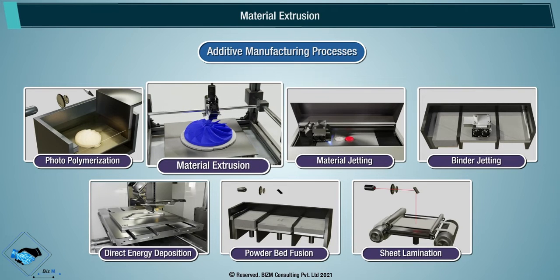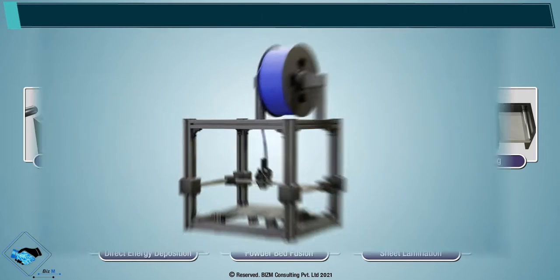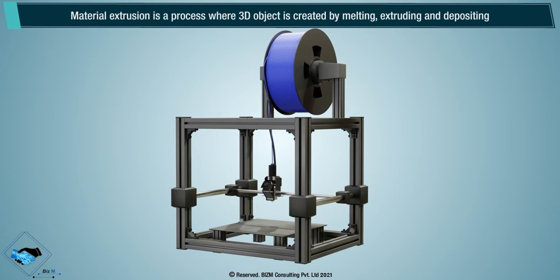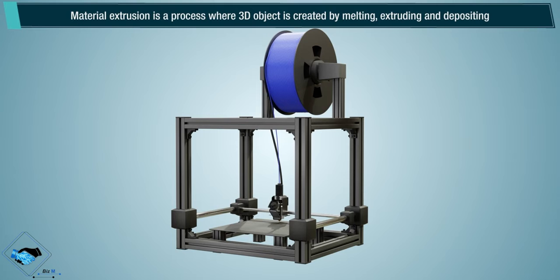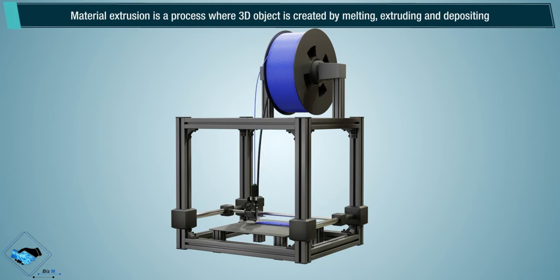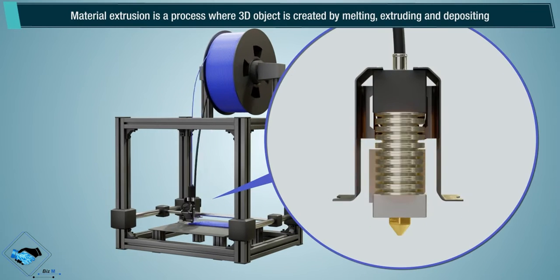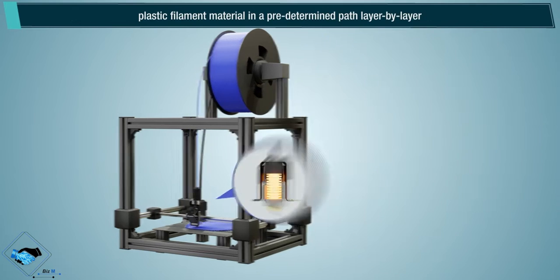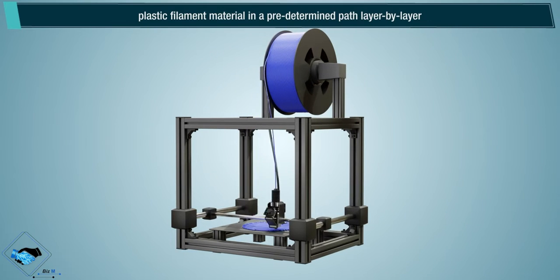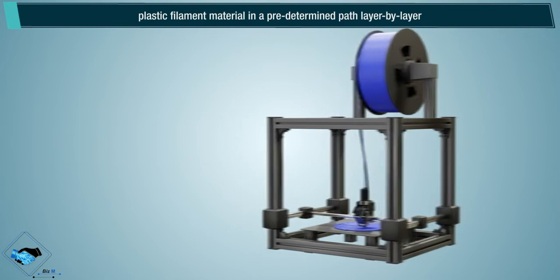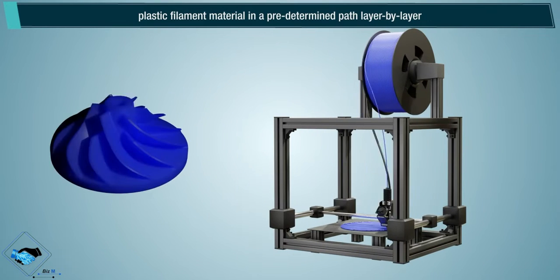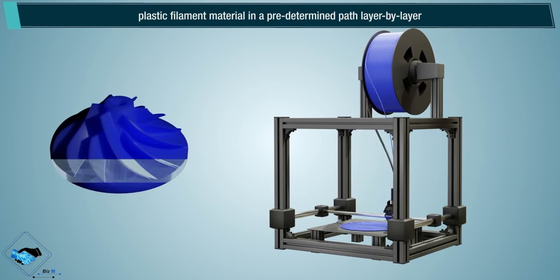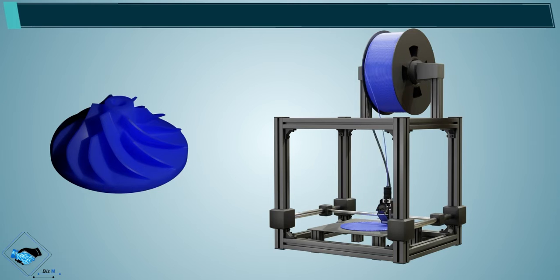Material Extrusion is a process where a 3D object is created by melting, extruding, and depositing plastic filament material in a predetermined path, layer by layer.